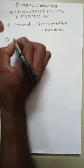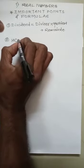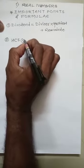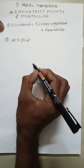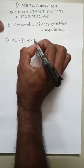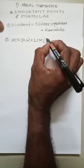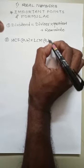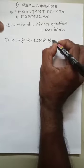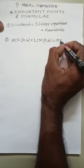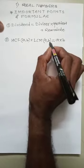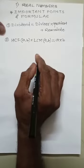Then second: HCF of numbers A and B times LCM of numbers A and B equals the product of these two numbers A and B. This is the second formula.